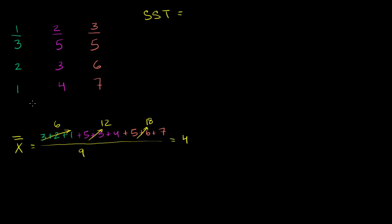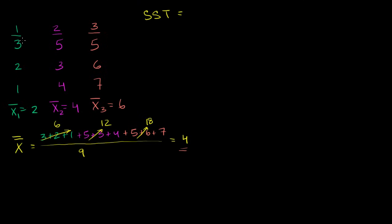Let me show you that the grand mean is the same as the mean of the means. The mean of group 1 is 3 plus 2 plus 1, that's 6, divided by 3 data points, which equals 2. The mean of group 2: 5 plus 3 plus 4 is 12, divided by 3 is 4. The mean of group 3: 5 plus 6 plus 7 is 18, divided by 3 is 6. Taking the mean of the means — 2 plus 4 plus 6 is 12, divided by 3 — you again get 4. So you can view the grand mean as the mean of all data across all groups, or the mean of the group means.